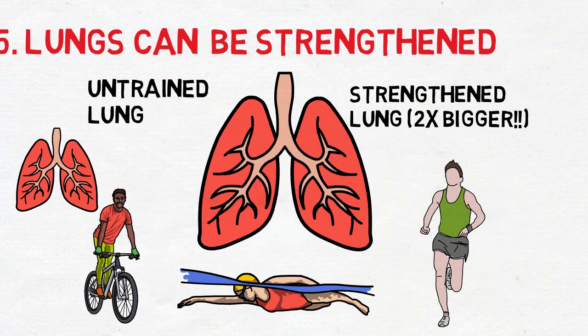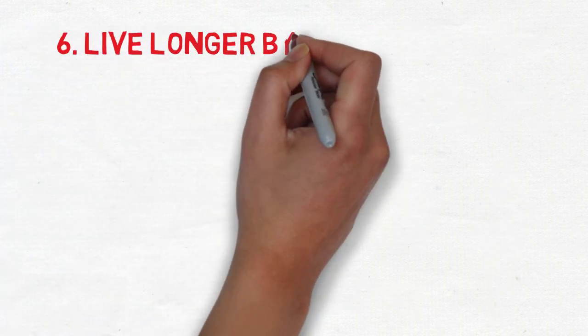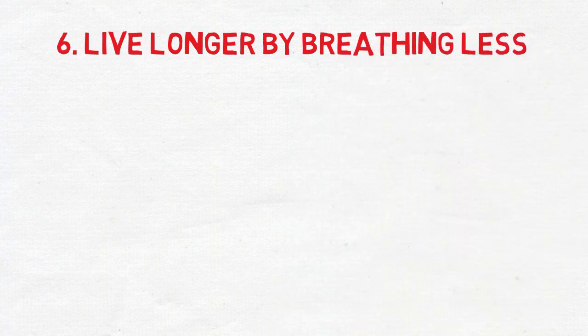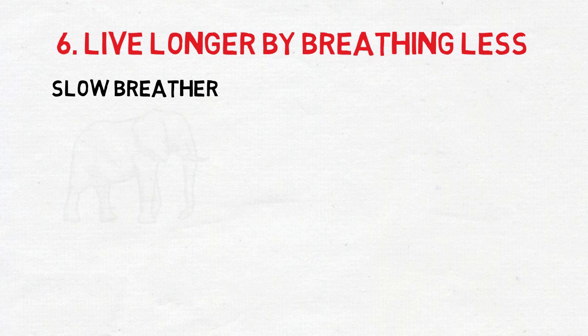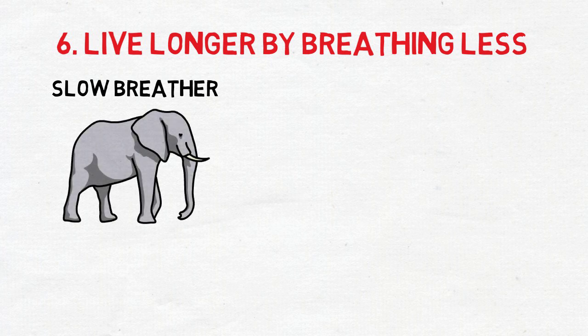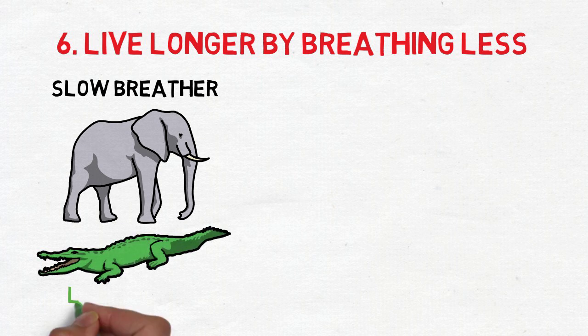And lastly, live longer by breathing less. Throughout the animal kingdom, there is a pattern. The animals with the slowest heart rates live the longest on average. Elephants and alligators regularly only take 1 to 5 breaths a minute and live longer than almost any other animal species.